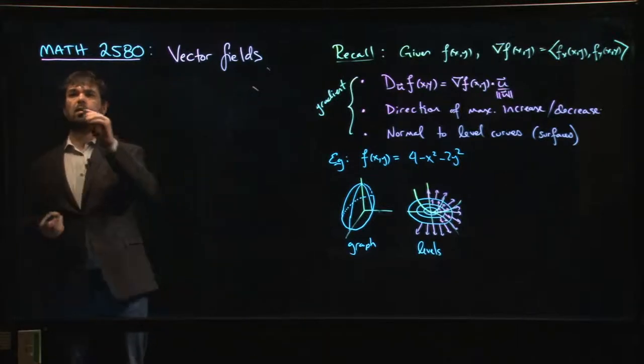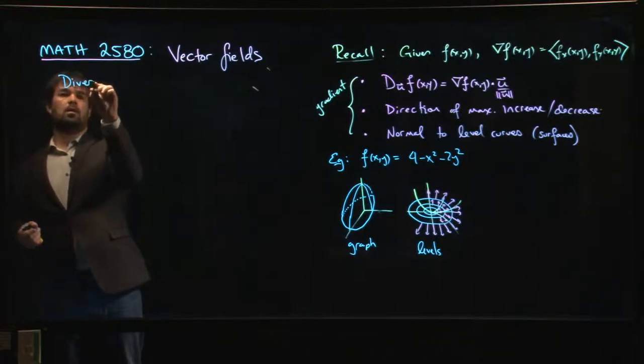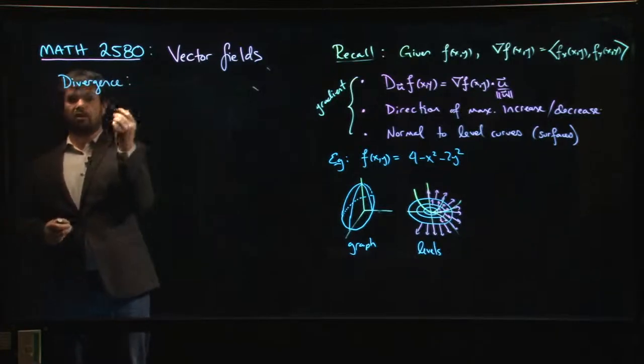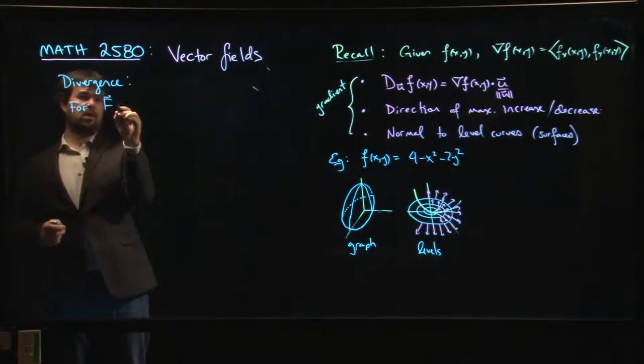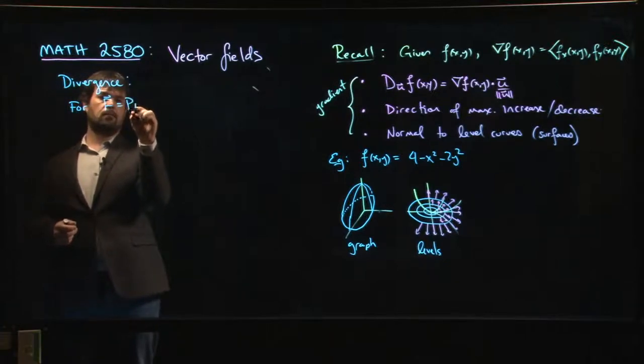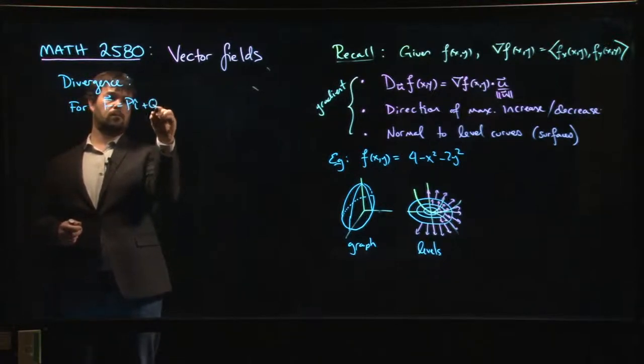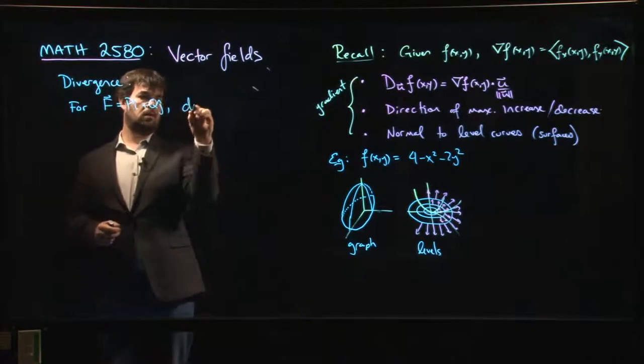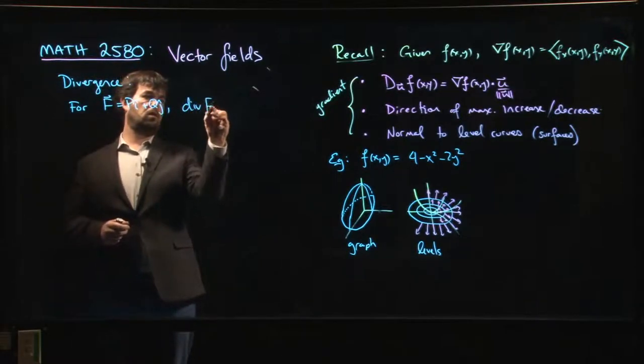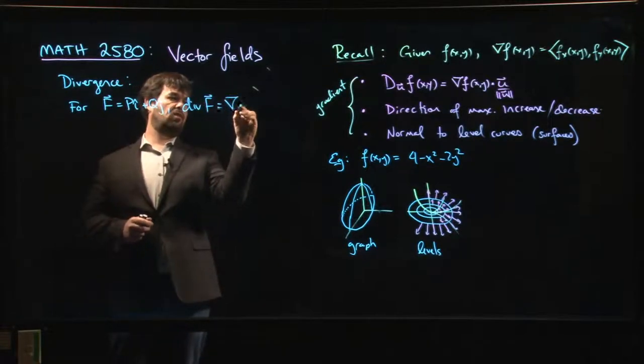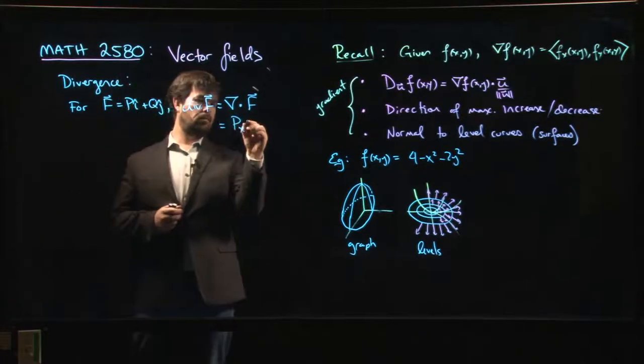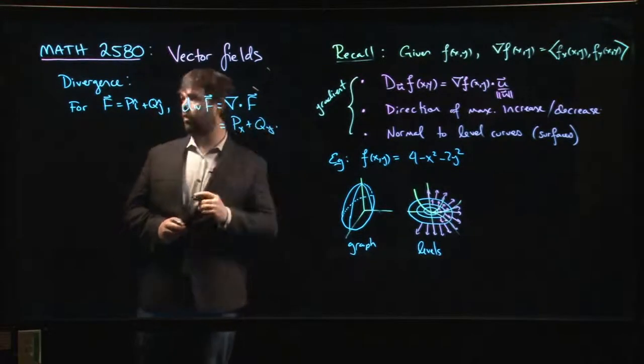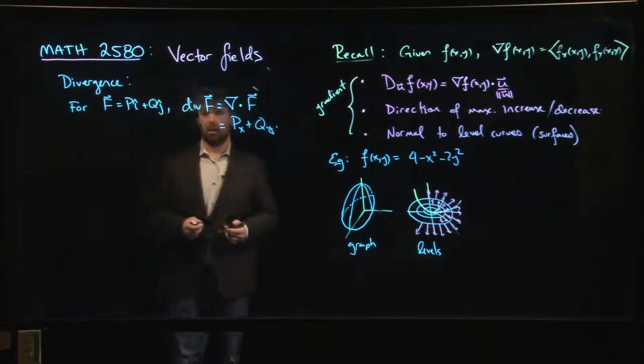So just to remind you, the divergence looks like this. For a vector field in R2, the divergence of f, which we think of as this del dot f, is just the x derivative of the x component plus the y derivative of the y component.